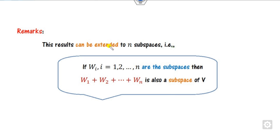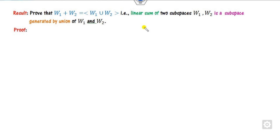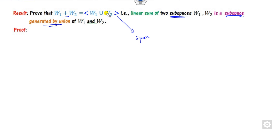This result can be extended to n subspaces: if you have n subspaces, the linear sum of n subspaces is also a subspace. We can also see that the linear sum is equivalent to the linear span — the sum of two subspaces is the space generated by their union.